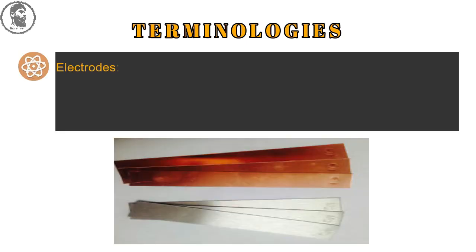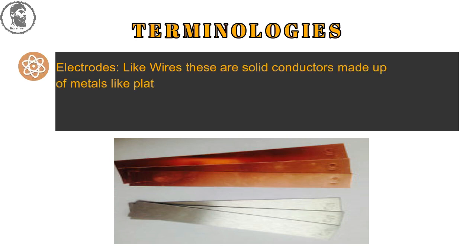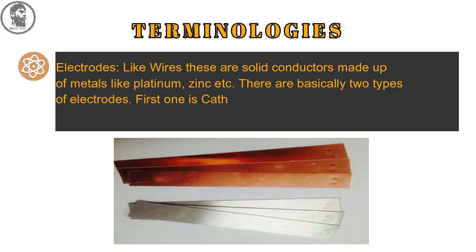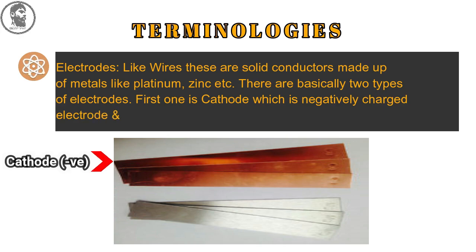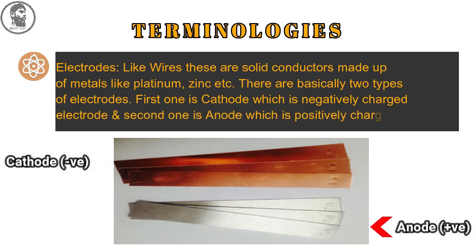Second, electrodes: Like wires, these are solid conductors made up of metals like platinum, zinc, etc. There are basically two types of electrodes. First one is cathode which is negatively charged electrode and second one is anode which is positively charged electrode.